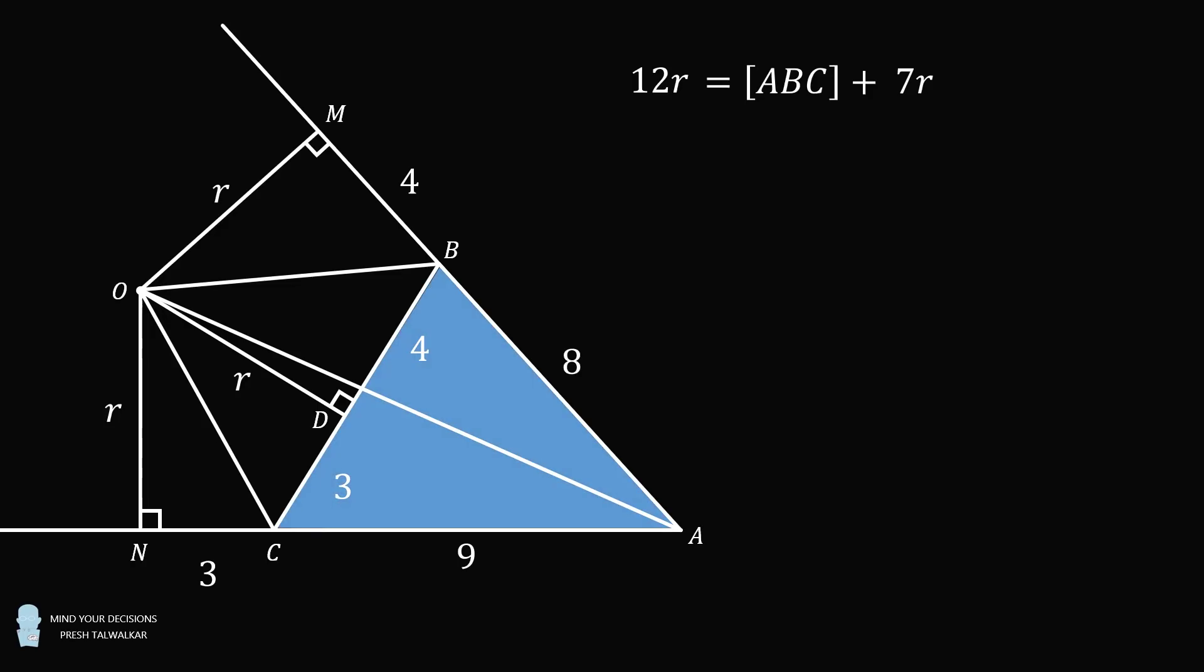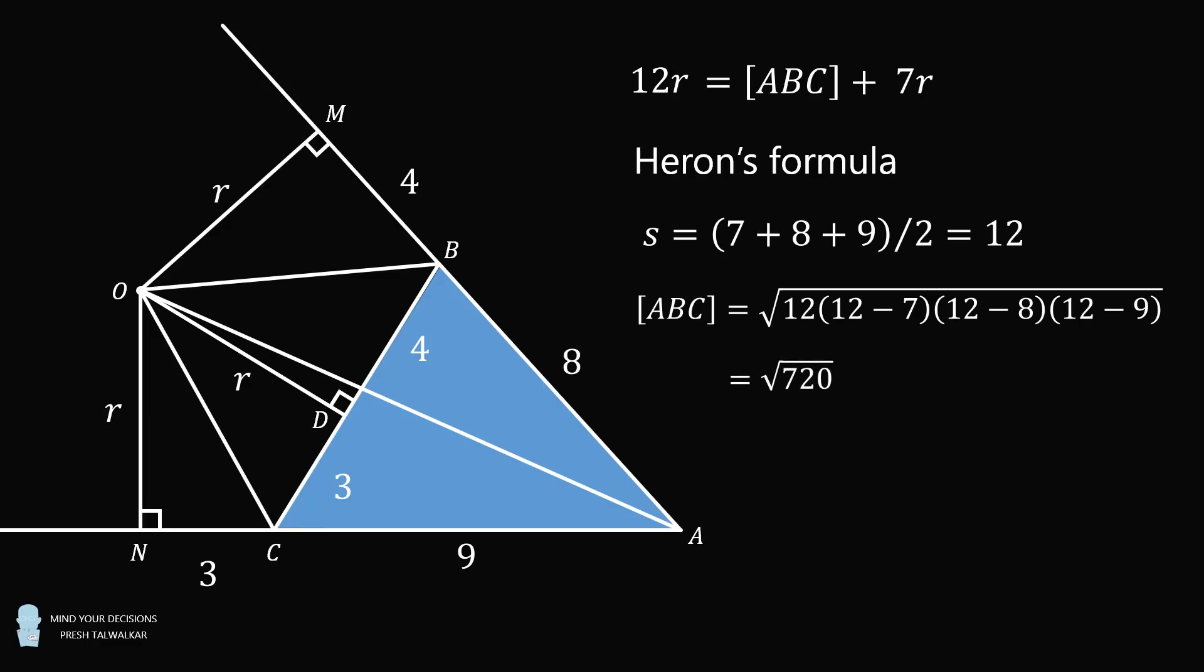We can solve for its area using Heron's formula. We first calculate the semi-perimeter, and then we substitute into the formula. This is a straightforward calculation. We simplify under the radical to get the area of triangle ABC is equal to 12 multiplied by the square root of 5.